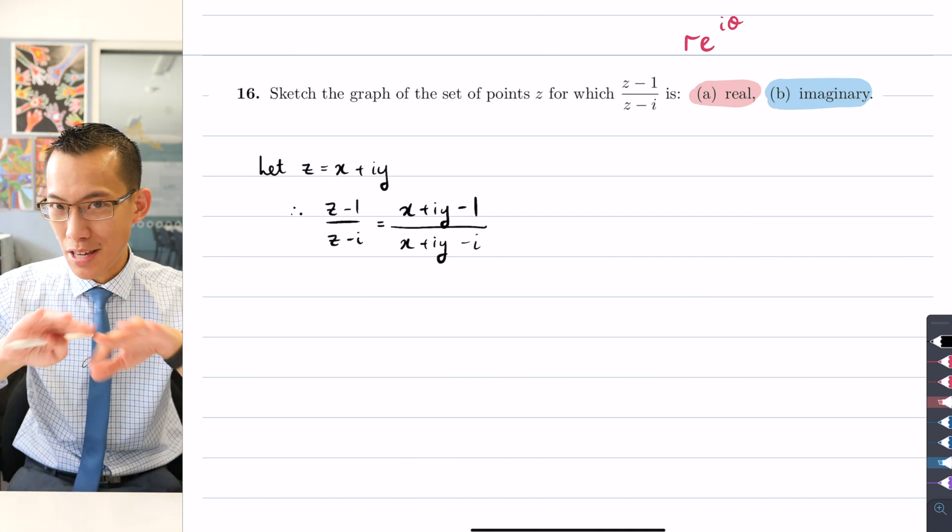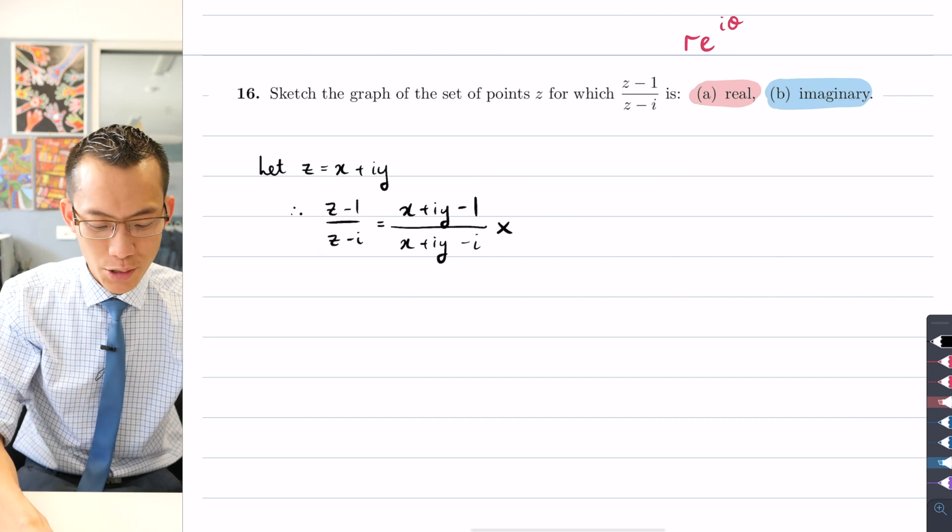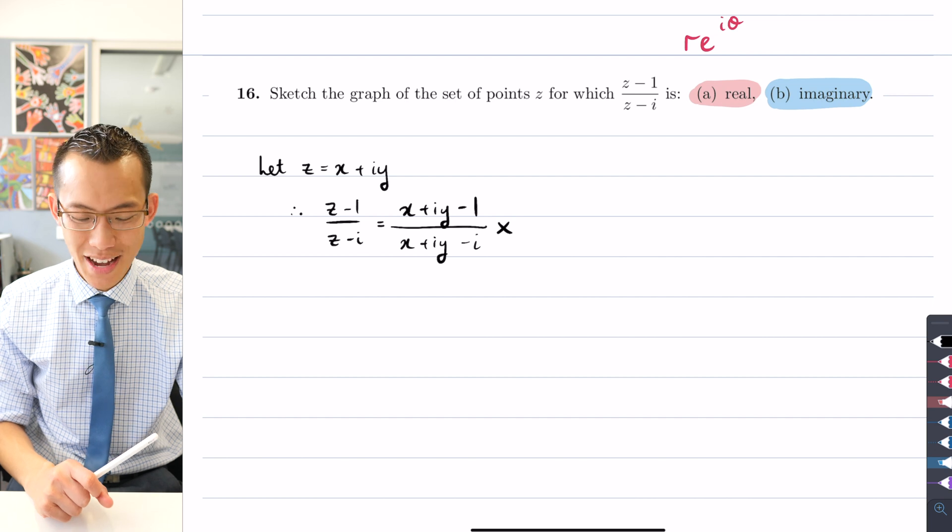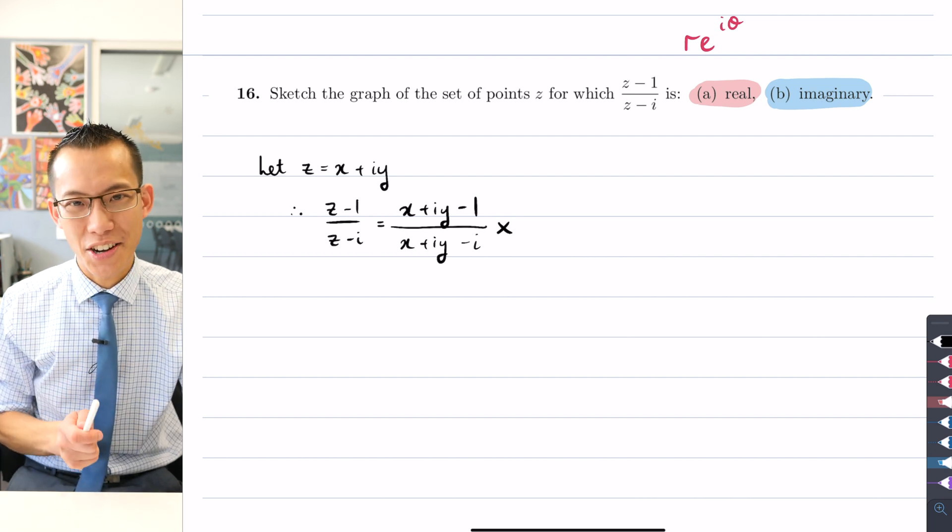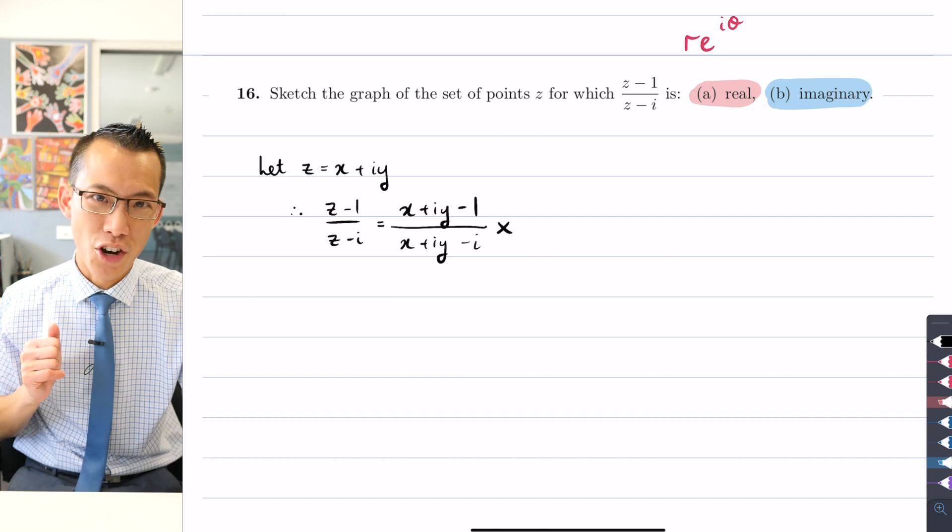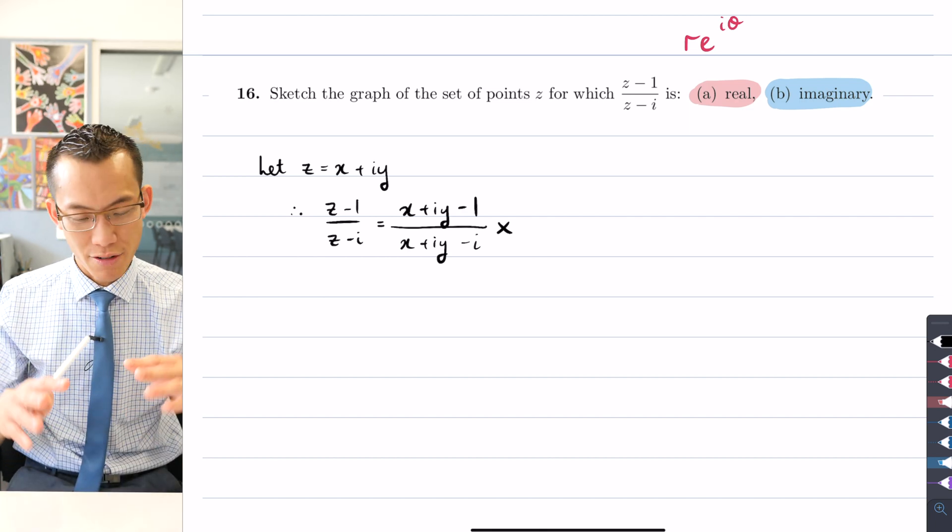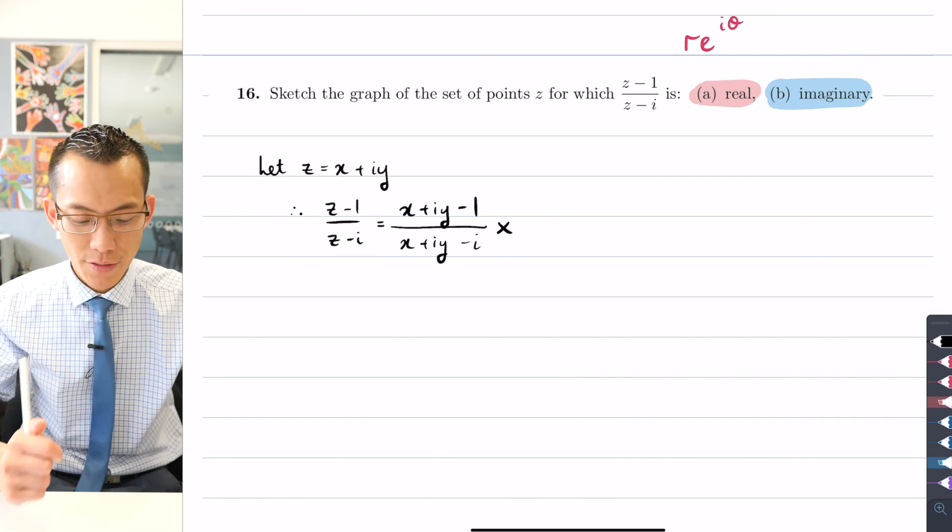So in order to sort of separate them out more cleanly, what I need to do is go back to the very beginning of the course, something we've been doing for a long time here, which is to multiply this fraction by the conjugate of the denominator. Because then I can use difference of squares, I can realize the denominator, and then I can start separating things out. So let's have a go at that.